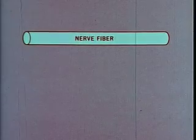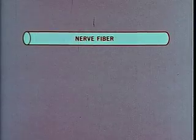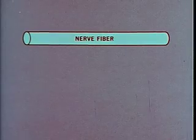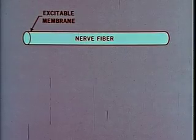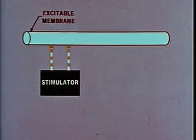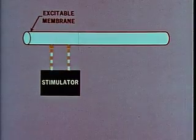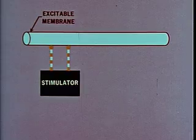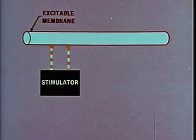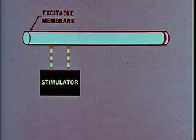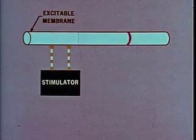The simplest kind of nerve fiber is a long thin cylinder covered by a membrane, which can be excited electrically. If a strong enough electric current is applied to the membrane, it produces a momentary physical change in the membrane called the nerve impulse, which travels away from the point of stimulation in both directions.